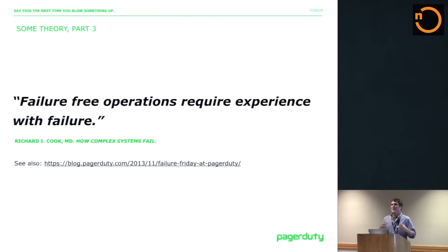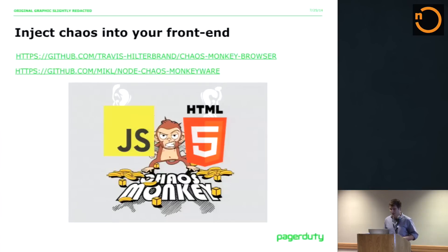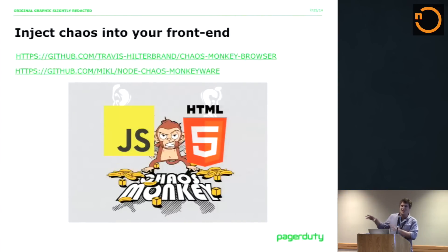The last part of the theory is that failure-free operations require experience with failure. As you find new cases of failure, you get better at managing it and you create more resilient apps. That's definitely a big part of PagerDuty culture — we have this thing called Failure Friday where every Friday we inject failure into our systems. The fun thing is you can actually do that with front-end code too. People have taken Chaos Monkey and started to port it to the front-end. Chaos Monkey is the well-known Netflix project where they actually injected chaos into their back-end and things started to break so they could understand their systems better.